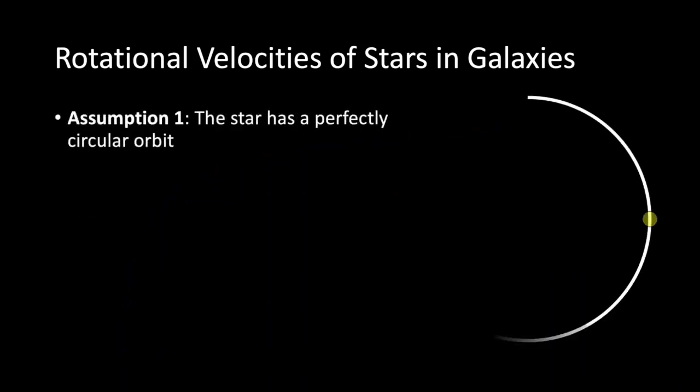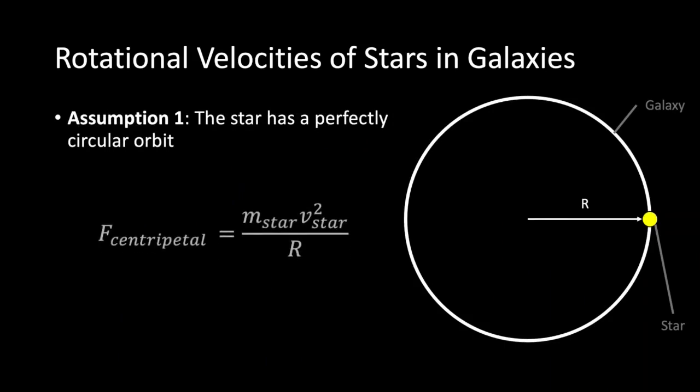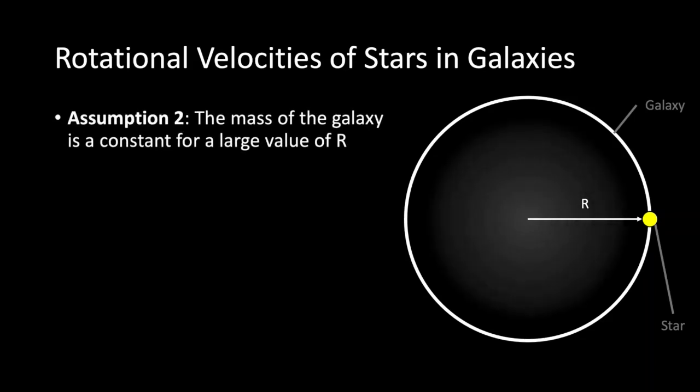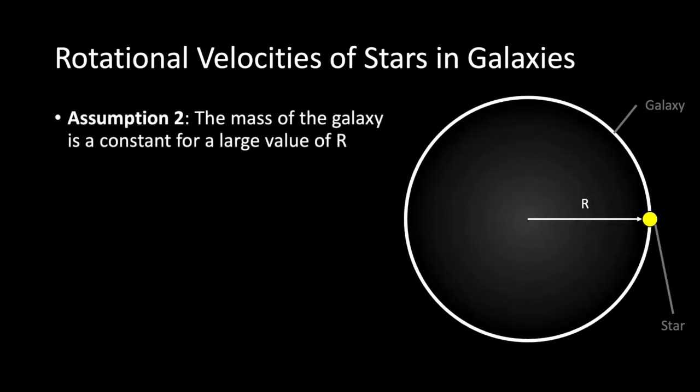Assumption 1, the star has a perfectly circular orbit. This allows us to use the equation for centripetal force. Assumption 2, as most of the mass of the galaxy is concentrated in the center, let's make the mass of the galaxy a constant.